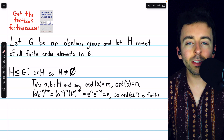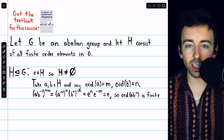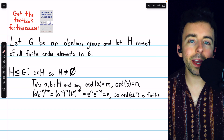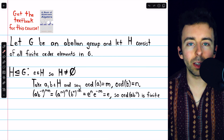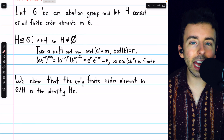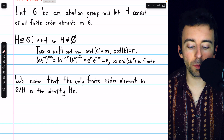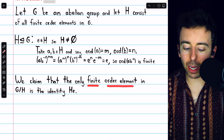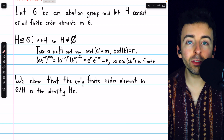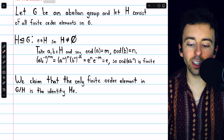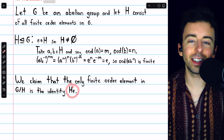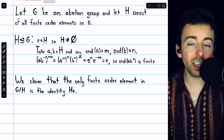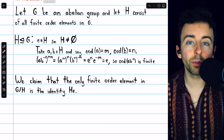So we've established that H is a subgroup of G, and since G is abelian, that means H is a normal subgroup, and so we may consider the quotient group of G by H. Now our claim — which is what makes this quotient group interesting — is that the only finite order element in the quotient group is going to be the identity, the coset H times the identity. That's the identity element of the quotient group, and we claim that's the only one in the quotient group that has finite order.